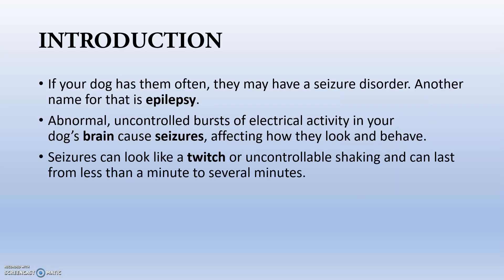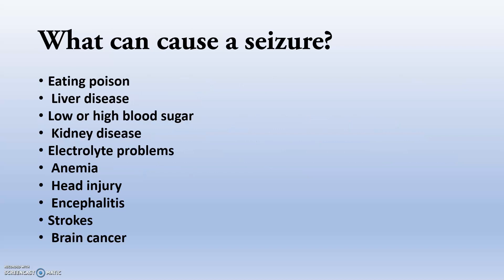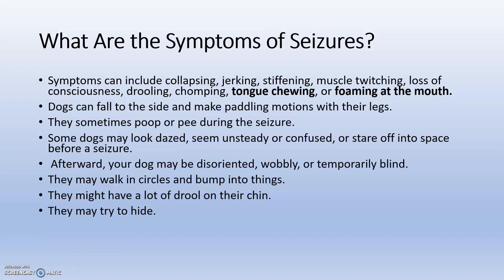What actually appears as seizures is uncontrollable tension — these are brain waves, electrical activity which is uncontrolled, or an abnormal uncontrolled burst in electrical activity in the brain that leads to seizures. What can cause a seizure? That includes eating a poison, liver disease, low or high blood pressure, kidney disease, electrolyte problems, anemia, head injury, encephalitis, strokes, brain cancers, and also parasites.